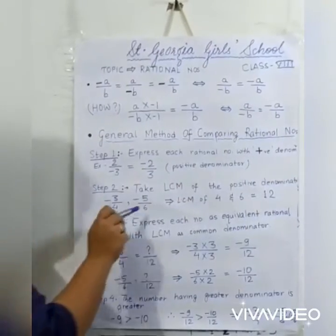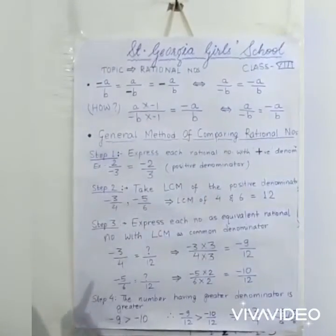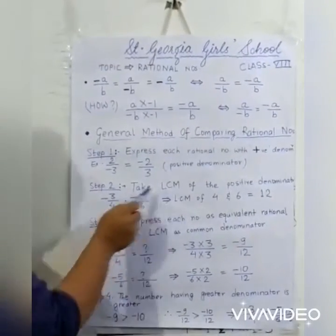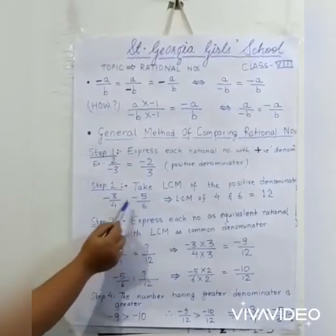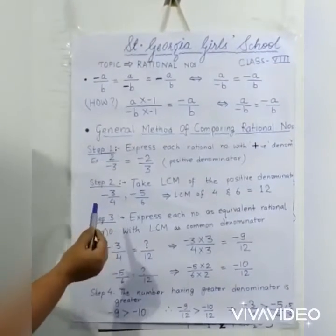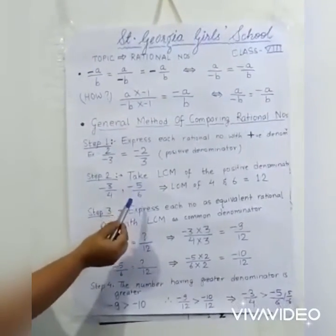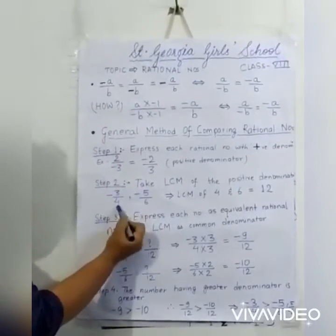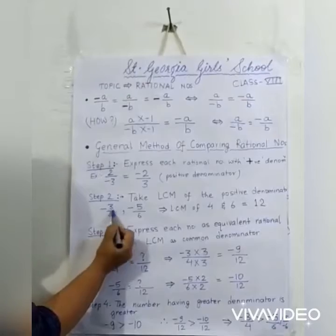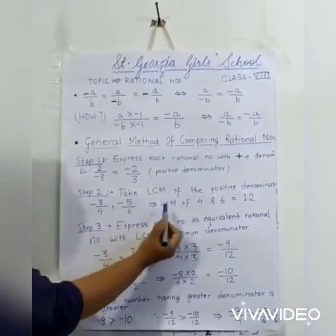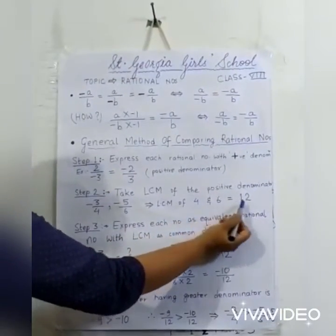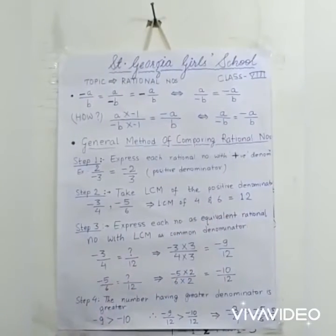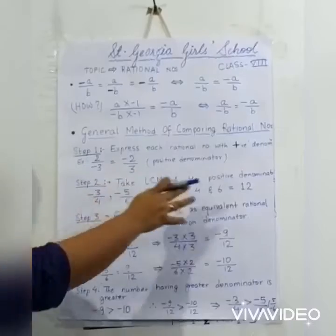Step 2 is to take the LCM of the positive denominators. Suppose two rational numbers are given: minus 3 by 4 and minus 5 by 6. The denominators are 4 and 6, both positive. The LCM of 4 and 6 is 12. So we have first converted to standard form, then taken the LCM.